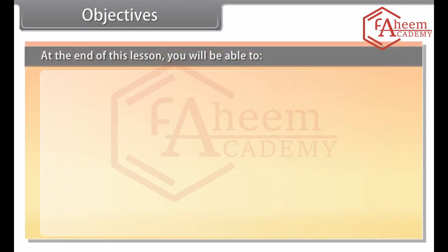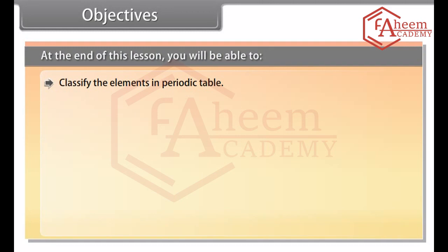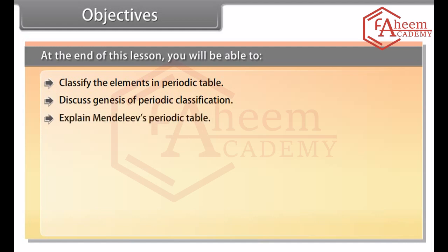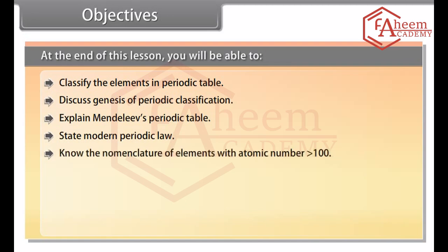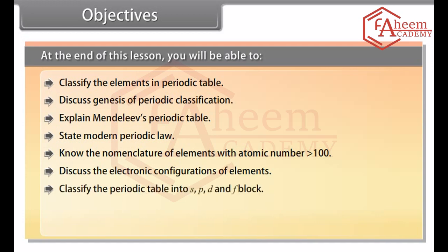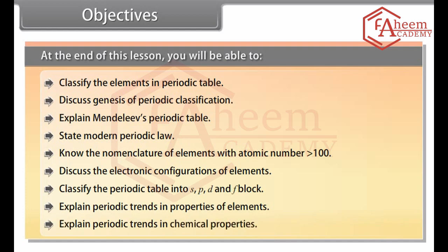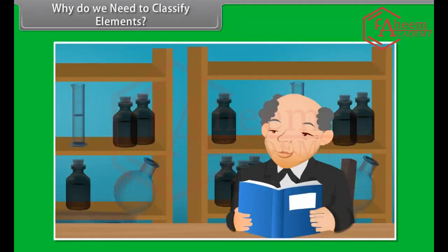At the end of this lesson, you will be able to: classify the elements in the periodic table; discuss the genesis of periodic classification; explain Mendeleev's periodic table; state the modern periodic law; know the nomenclature of elements with atomic number greater than 100; discuss the electronic configurations of elements; classify the periodic table into S, P, D and F blocks; explain periodic trends in properties of elements; and explain periodic trends in chemical properties.